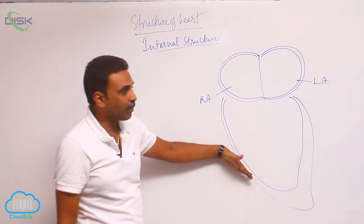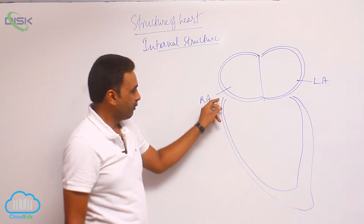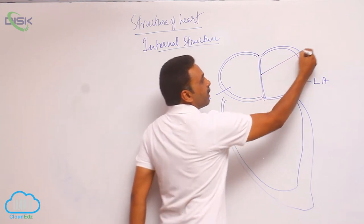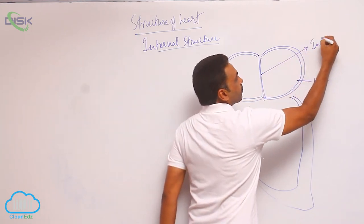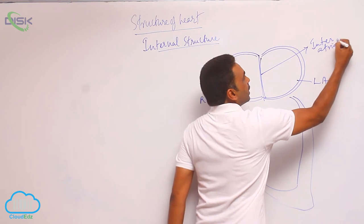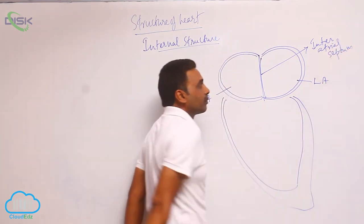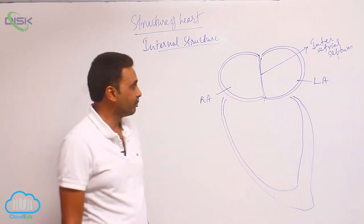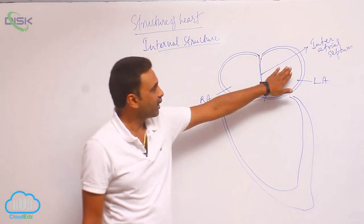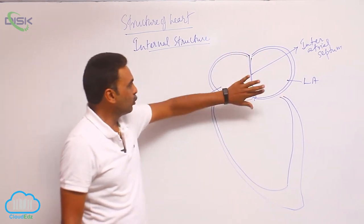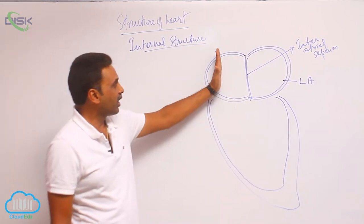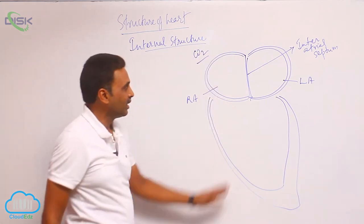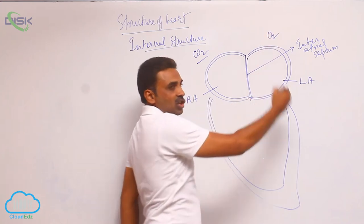Comparing atria and ventricles: atria are thin chambers whereas ventricles are thick chambers. Both the atria are separated by a septum called the inter-atrial septum. The right atrium is larger when compared to the left atrium. Both the atria are collecting chambers. The right atrium collects deoxygenated blood, and the left atrium collects oxygenated blood.